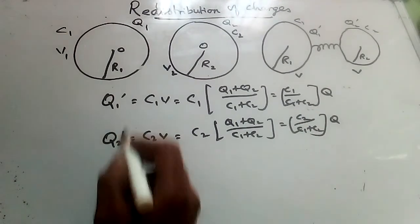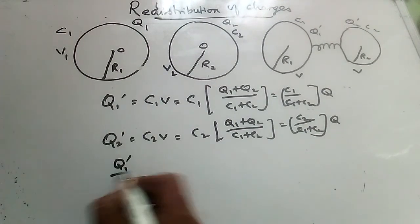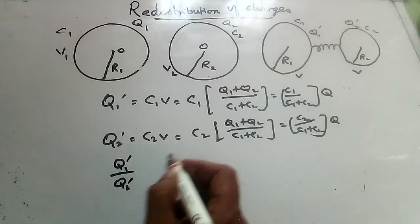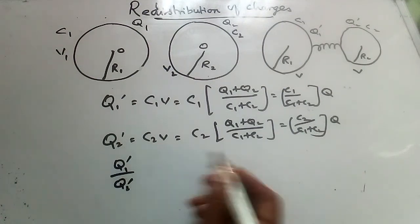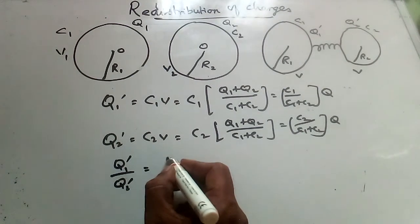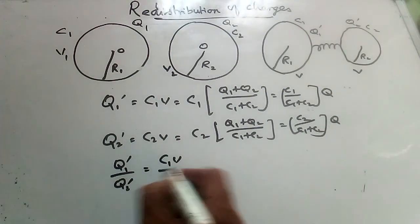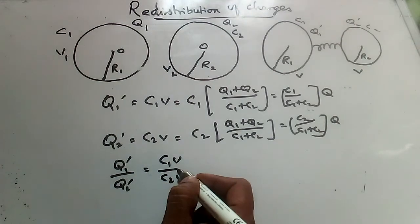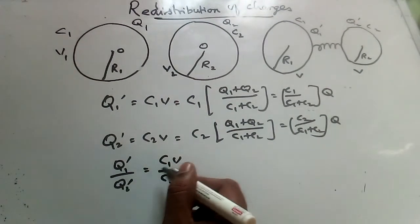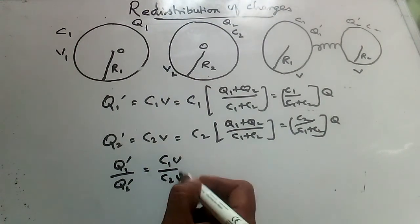Now we can find the ratio between these two, Q1 dash and Q2 dash. That is the ratio just after redistribution. So Q1 dash by Q2 dash equal to C1V by C2V. So Q1 dash by Q2 dash is equal to C1 by C2, because V cancels there.